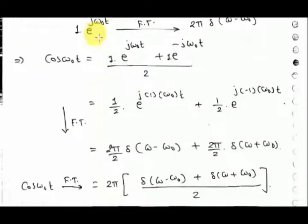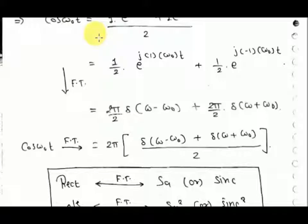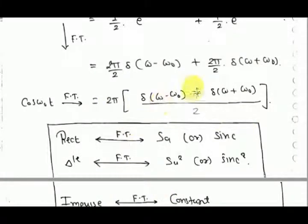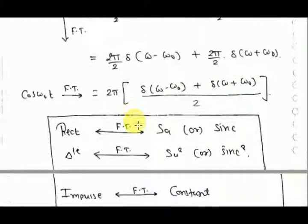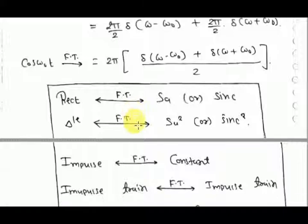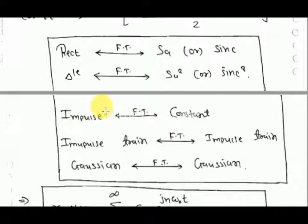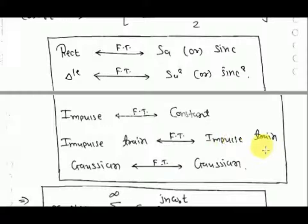Remember these standard Fourier transform pairs: the sinc (sampling) function, the triangular function whose transform is sinc squared, the impulse function whose transform is a constant, the impulse train whose transform is also an impulse train, and the Gaussian function whose transform is also Gaussian. The Fourier transform of cos(omega_0 t) is pi times [delta(omega minus omega_0) plus delta(omega plus omega_0)].